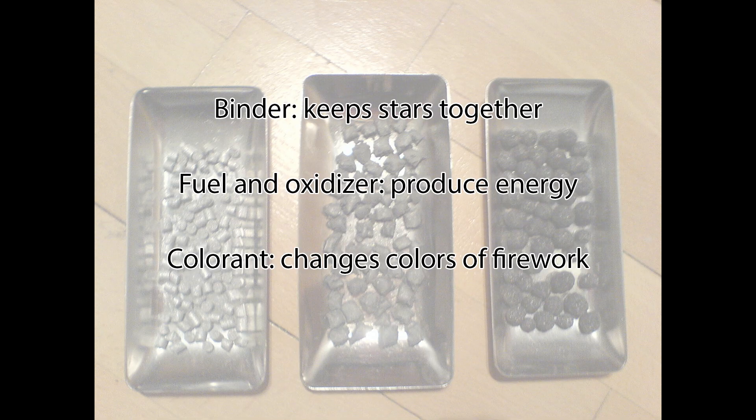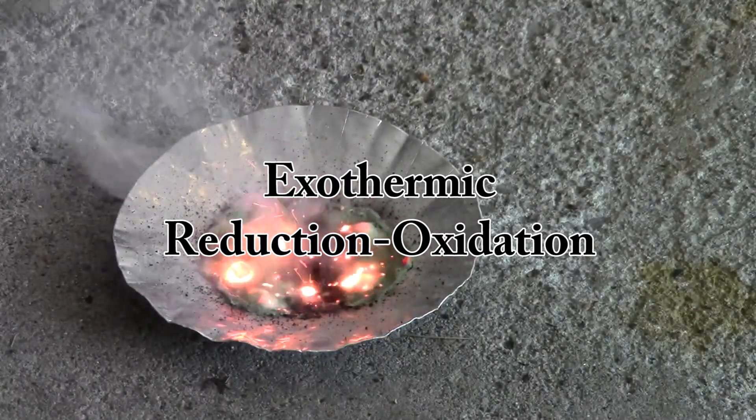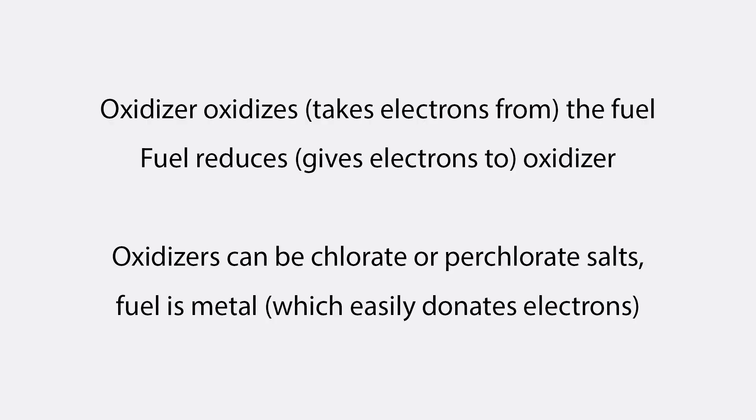The oxidizer and fuel react in an exothermic reduction-oxidation reaction, meaning electrons are transferred between molecules during the reaction. The oxidizer, or oxidizing agent, oxidizes the fuel, meaning it takes away some electrons, while the fuel acts as a reducing agent. The oxidizer is usually a salt containing chlorates or perchlorates. When these chlorates combust, they release the oxygen contained in them, which reacts with carbon or sulfur in the fuel. These reactions can reach temperatures of up to 2000 degrees Celsius, which makes the fireworks brighter and larger in size by making the gases produced by the explosion expand at a quicker rate.